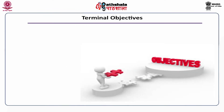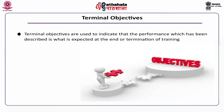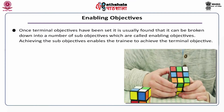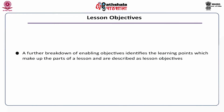Terminal objectives are used to indicate that the performance described is what is expected at the end or termination of training. Enabling objectives: once terminal objectives have been set, it is usually found that they can be broken down into a number of sub-objectives called enabling objectives. Achieving the sub-objectives enables the trainee to achieve the terminal objective. Lesson objectives: a further breakdown of enabling objectives identifies the learning points which make up the path of a lesson, described as lesson objectives.